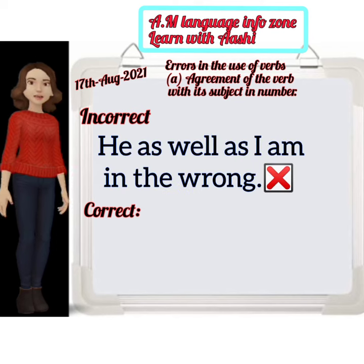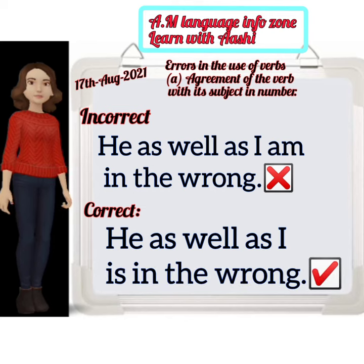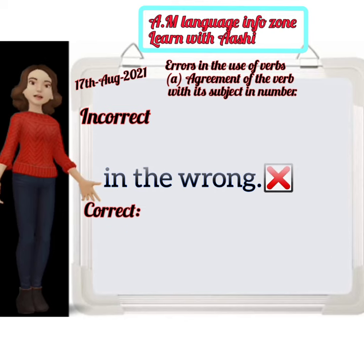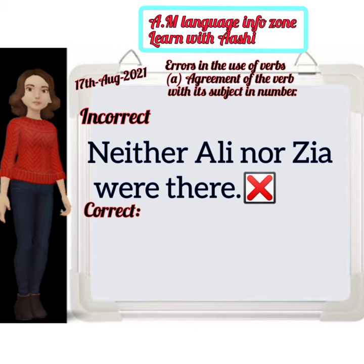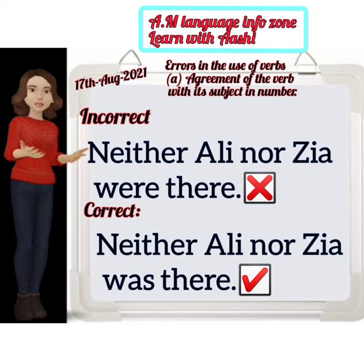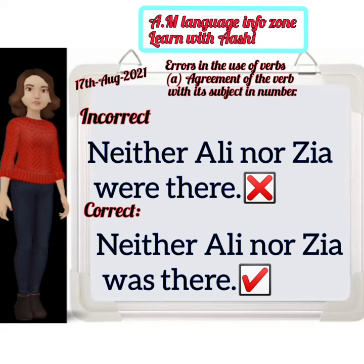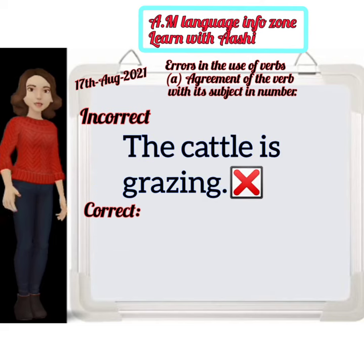Next: 'Neither Ali nor Zia were there' — incorrect. The correct form is: 'Neither Ali nor Zia was there.' Then: 'The cattle is grazing' — incorrect.